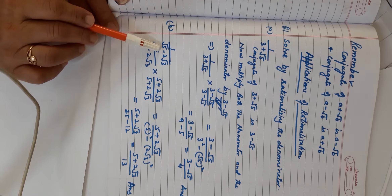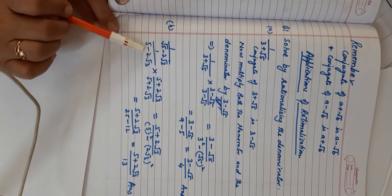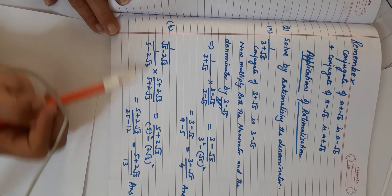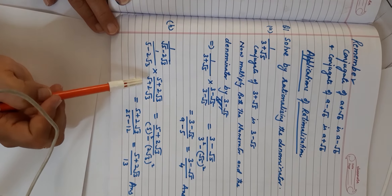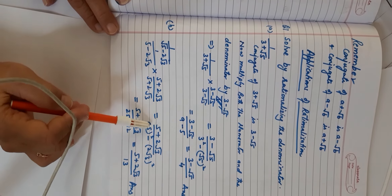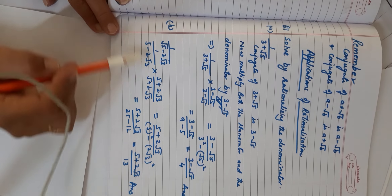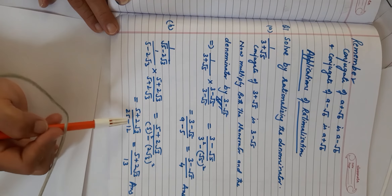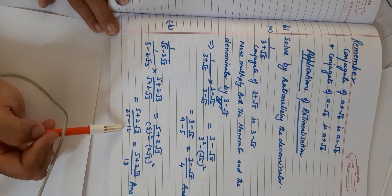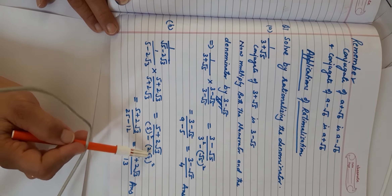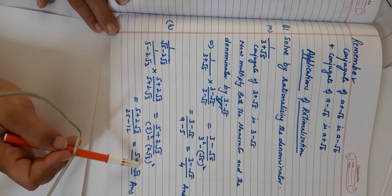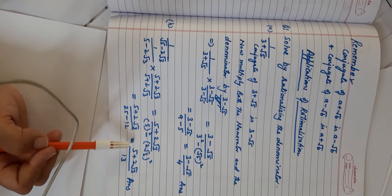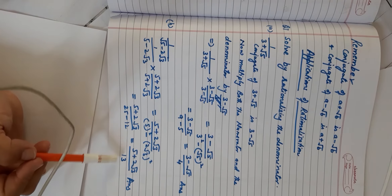Next: 1/(5−2√3). Multiply numerator and denominator by the conjugate (5+2√3): 1/(5−2√3) × (5+2√3)/(5+2√3) = (5+2√3)/(5²−(2√3)²). Now 2√3 × 2√3 = 4 × 3 = 12, so the denominator is 25−12 = 13. This gives (5+2√3)/13.